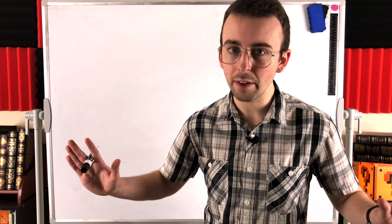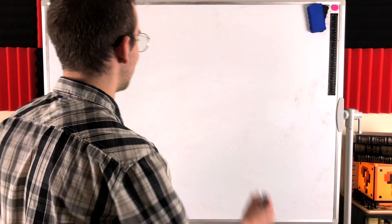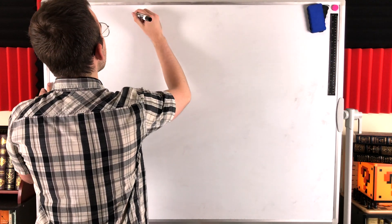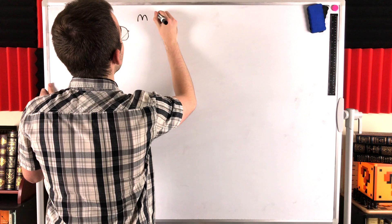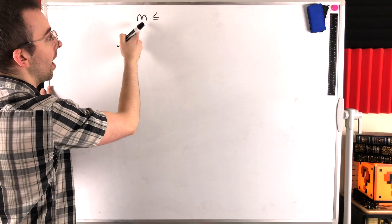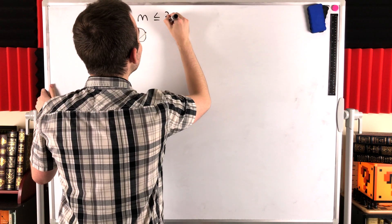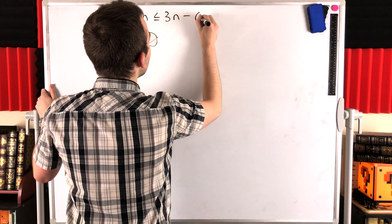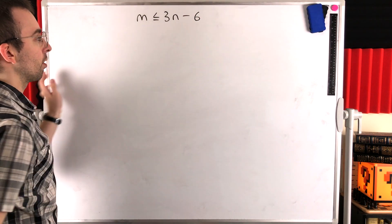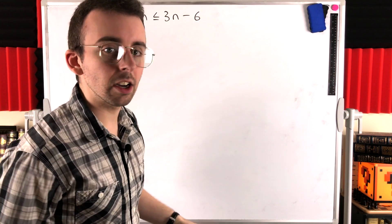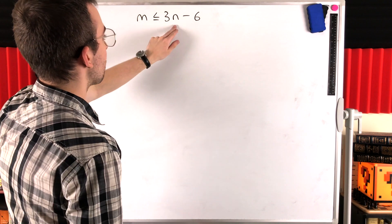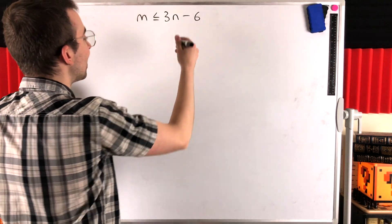This was requested by a viewer over Instagram. I don't put private messages on the screen, but I always appreciate those viewer requests — be sure to leave yours down in the comments. What are we proving today? We are proving that for a planar graph, its number of edges — its size, which we'll call M — is less than or equal to three times its number of vertices minus six, that is, 3N minus 6.